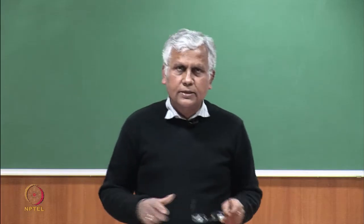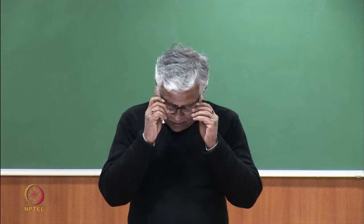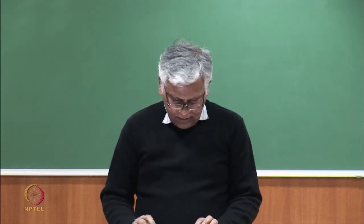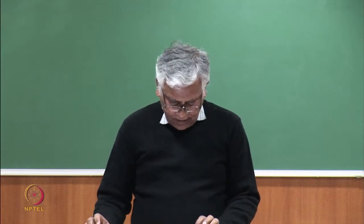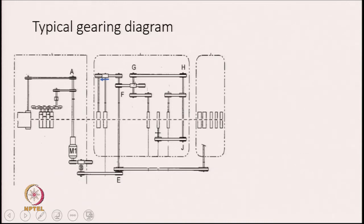We are going to discuss the gearing diagram of a lap former. The gearing diagram is shown here. These 4 are the calendar rollers. Here is a gearing diagram of a typical machine.